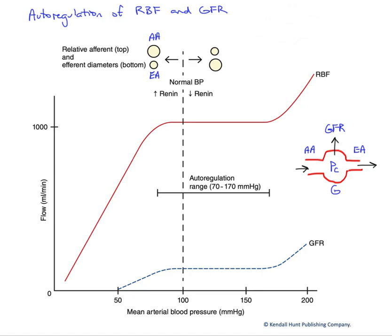In this graph, we want to look at autoregulation of both renal blood flow and glomerular filtration rate. This means the kidney possesses intrinsic mechanisms to make sure that renal blood flow and GFR remain relatively stable over a very broad range of arterial blood pressures shown on the x-axis. We have flow on our y-axis — renal blood flow in the red line and GFR in the dashed blue line. We're going to focus a bit more on GFR, although both are important.